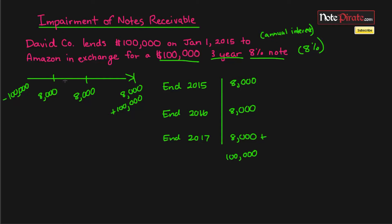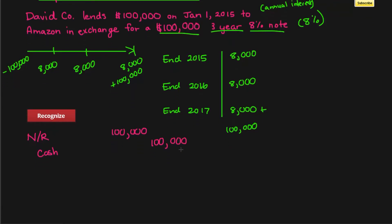Let's go ahead and first recognize this note before we do anything else. If the stated rate equals the effective rate, we know that this note is issued at par, and the amount that we are going to value it at is its face value. So we're going to debit Notes Receivable for $100,000, and the amount of asset we'll be giving up, which is cash, is also $100,000.